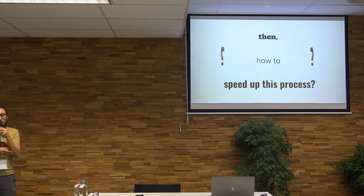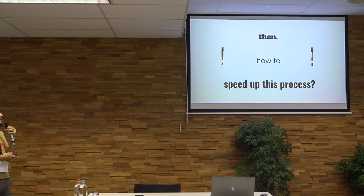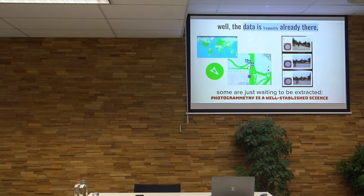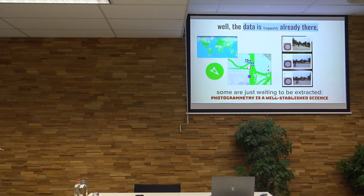So how do we speed up getting more of this kind of data? The data is frequently already there. We have many services and alternatives, but Mapillary has the biggest world coverage. There are lots of triangulated features — a plate appearing in many images can be triangulated using photogrammetry to determine its position. Photogrammetry is a very well-established science.